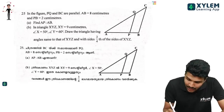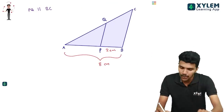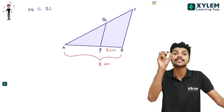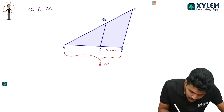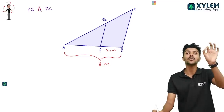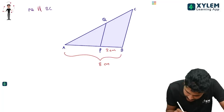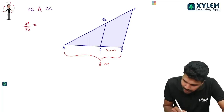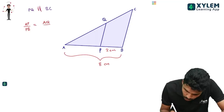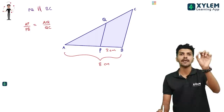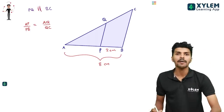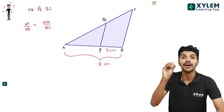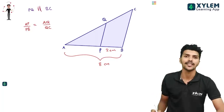Here, the figure says PQ. PQ is parallel to BC. I am going to study AP by PB and AQ by QC. What do you get for AQ by QC? It's a simple answer.